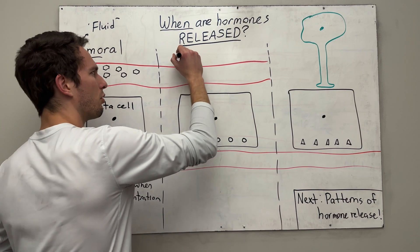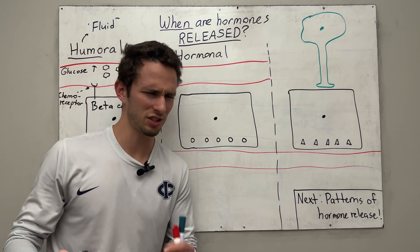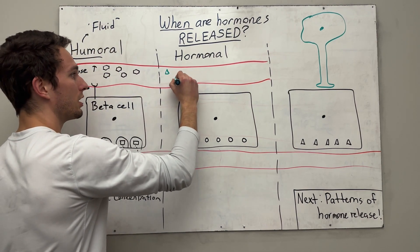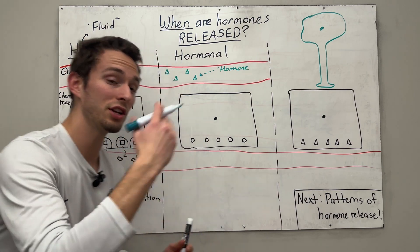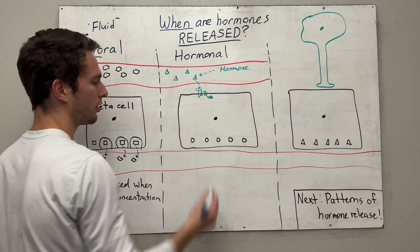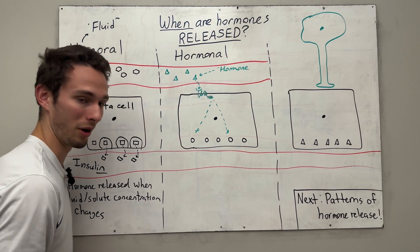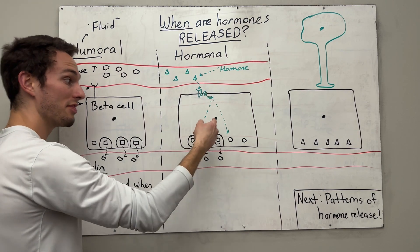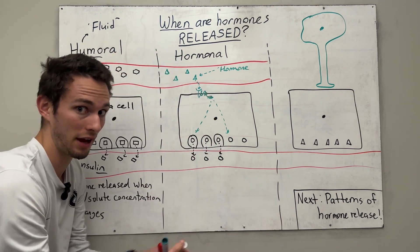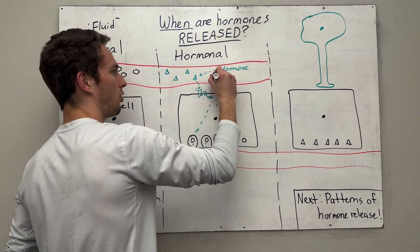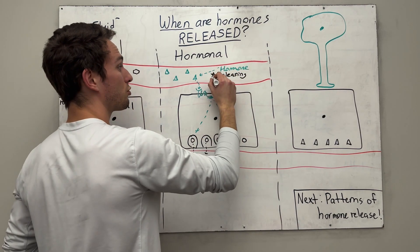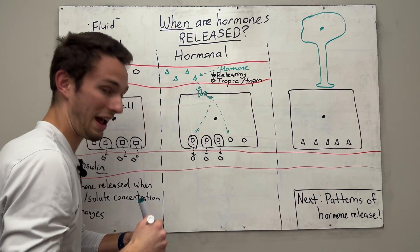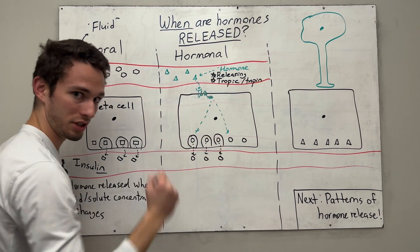Now the next one is called a hormonal response. This is going to seem a little confusing, but bear with me. A hormonal response is basically when there's already some hormone in the bloodstream, and that hormone is going to trigger this cell to then release its own hormone. So the hormone itself told this cell to release its hormone. This first hormone is often called a releasing hormone, or more formally a tropic hormone — where tropic or tropin refers to acting on a cell to tell that cell to release its own hormone.